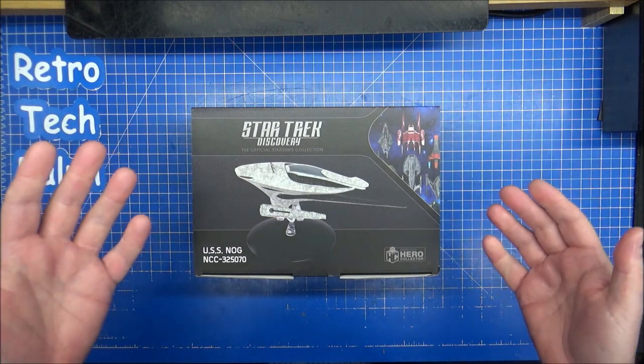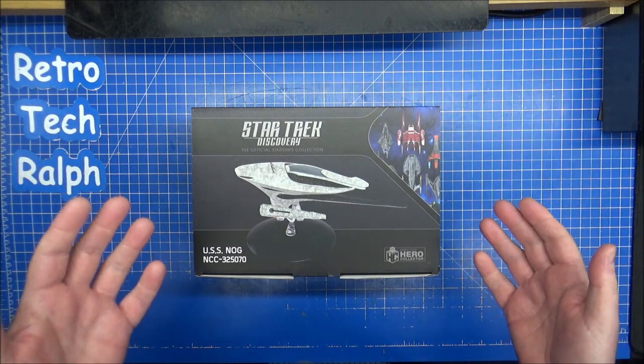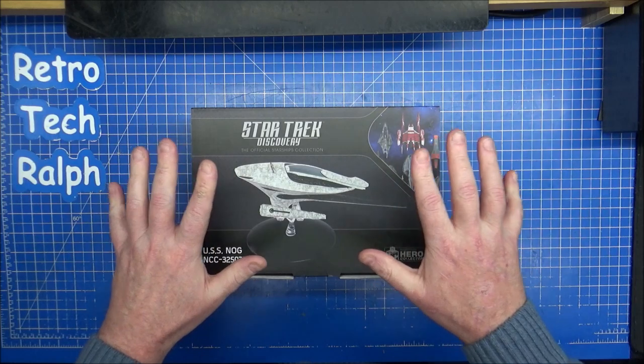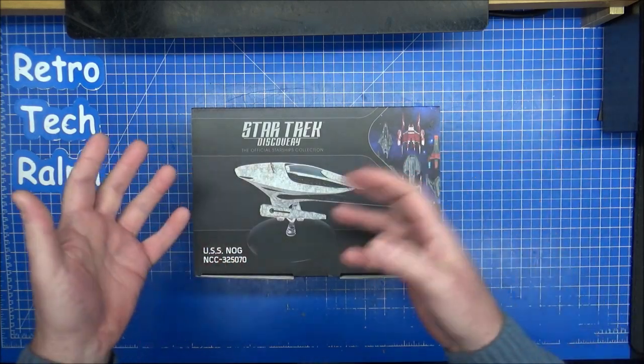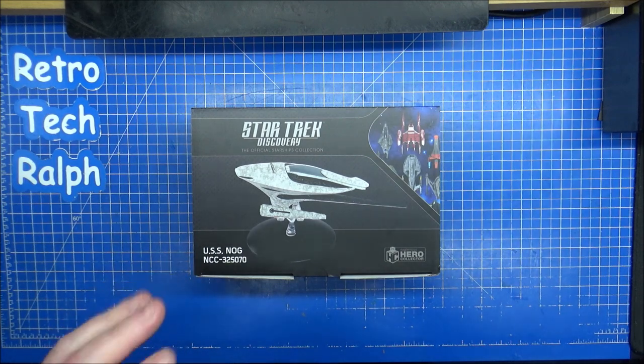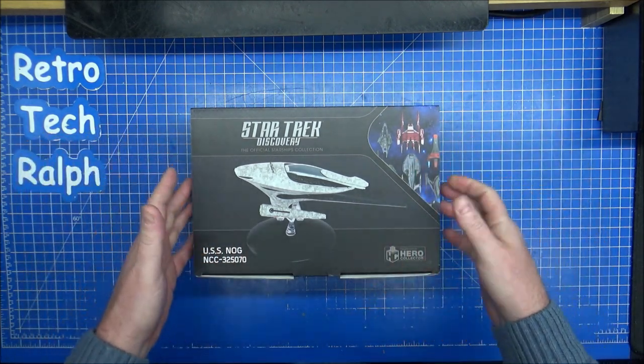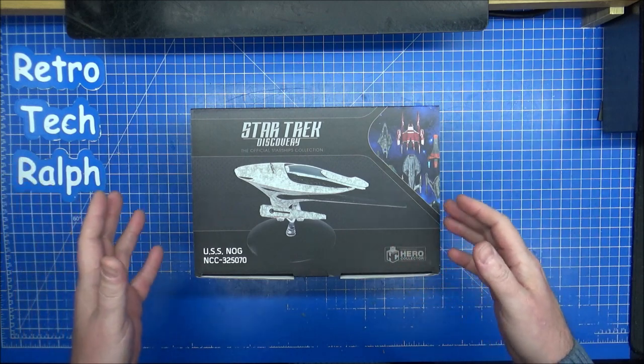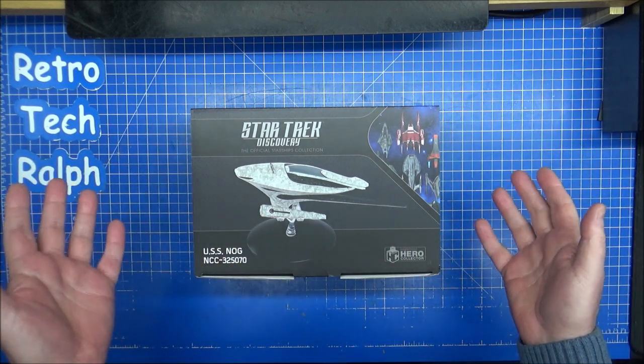This is USS Nog. Master Replicators bought all of the stock from Eagle Moss, from the liquidators for Eagle Moss. So this is to drop myself in it. If I get a million people watching this, I'm not going to get a bargain, but hey-ho, I've got to tell you guys anyway.